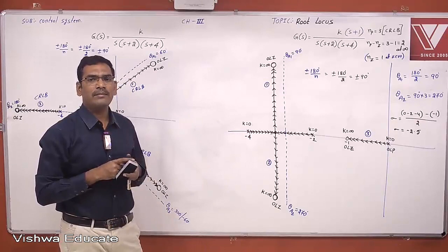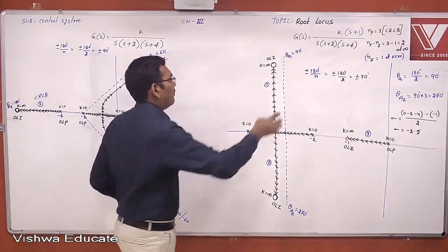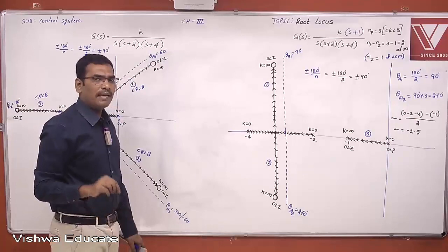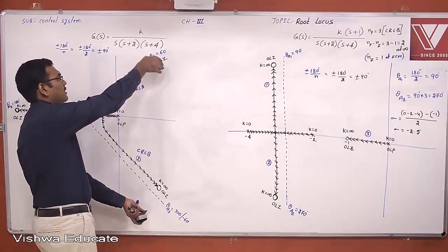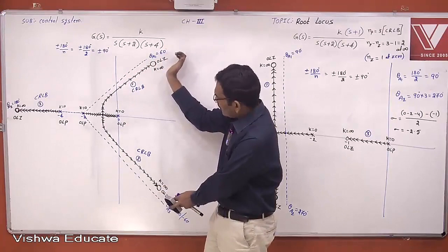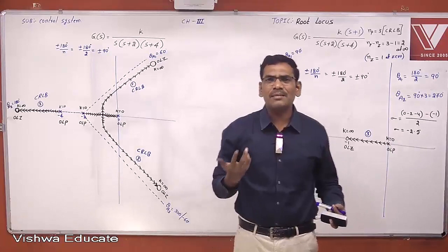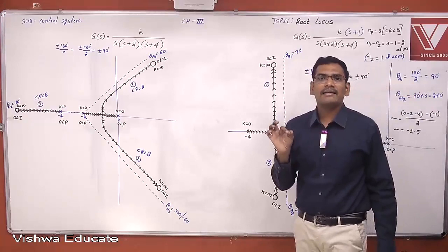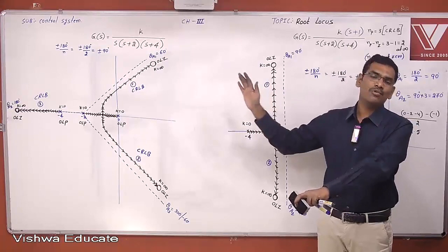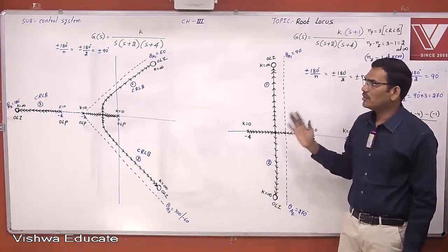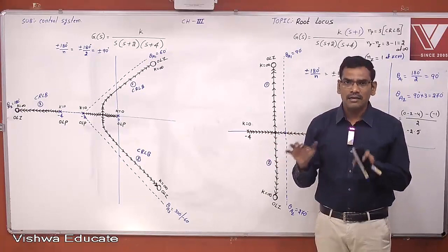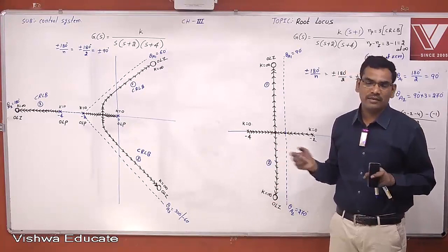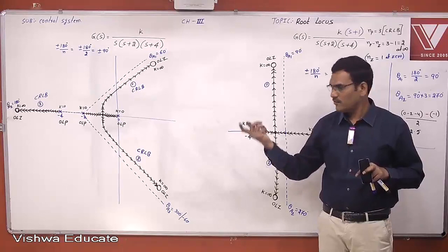By adding a finite zero, the branches on the right-hand side shift completely to the left-hand side, improving system stability. The effect of adding a zero is that it improves the system stability and moves poles toward the left-hand side. This is the method to draw root locus diagrams with a few key rules and regulations.